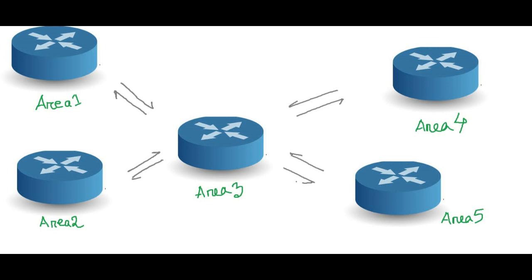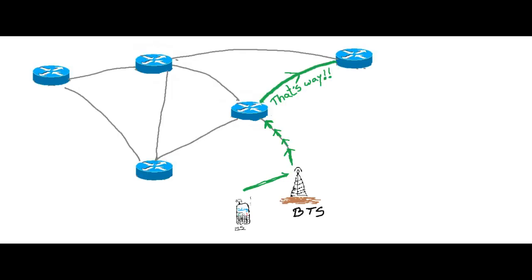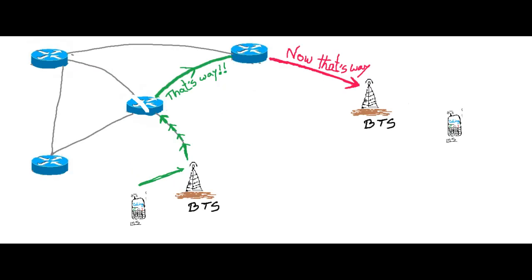The MSC is a central component of the system. It acts like a switching node and can route your call to your desired location. Before doing so, it determines your location identity, your desired person's location identity, your billing information, your authentication, your registration, and your equipment registration. If everything checks out, the MSC routes the call to your requested area's MSC.